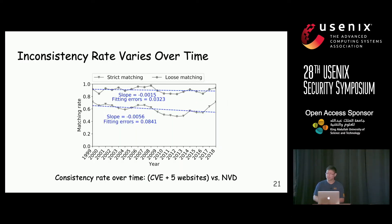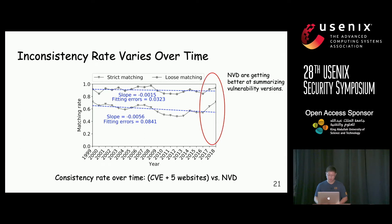The consistency rate never stays constant — it varies over time. From the diagram, we can see that the average matching rate decreased slowly over the past 20 years. However, in recent three years, it shows an obvious increasing pattern, suggesting that things are getting better.